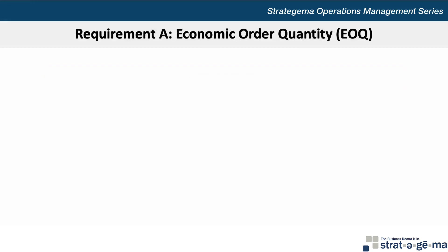For requirement A, we want to apply the Economic Order Quantity or EOQ formula, where the EOQ or Q star equals the square root of 2 times D times C0 divided by CH, where D is the annual demand, C0 is the cost to place one order, and CH is the holding cost.